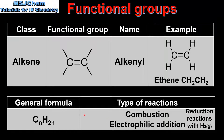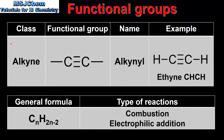Alkenes can also undergo reduction reactions to produce alkanes. Next we'll look at the alkynes. Like the alkenes, the alkynes are unsaturated hydrocarbons. The class name is alkyne and the functional group name is alkynyl. The functional group is a carbon to carbon triple bond. An example of an alkyne is ethane, which we can see here on the right. The general formula for the alkynes is CnH2n-2. Like the alkenes, alkynes undergo combustion reactions and electrophilic addition reactions.